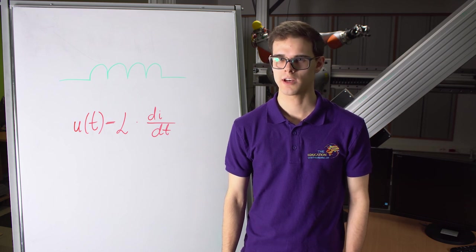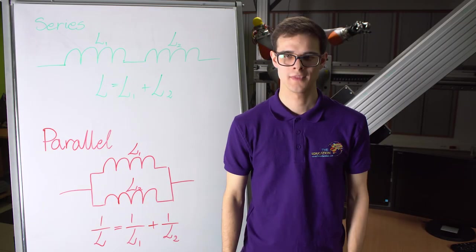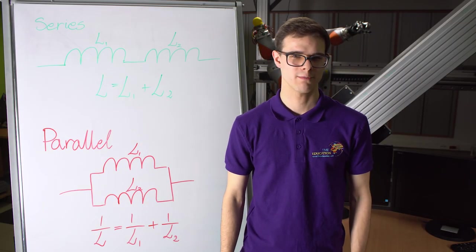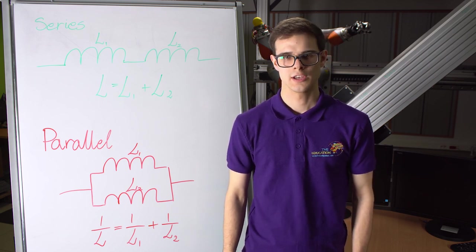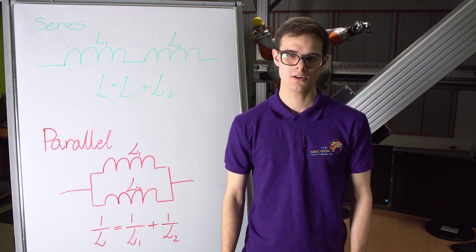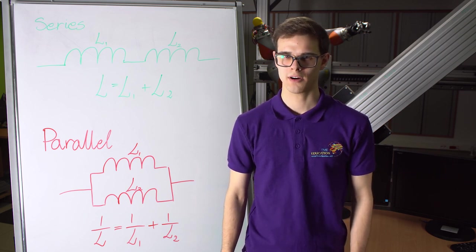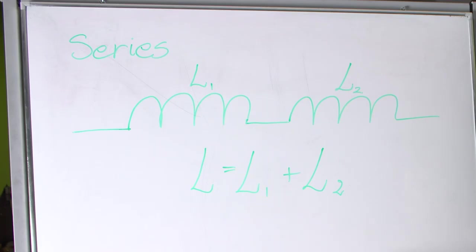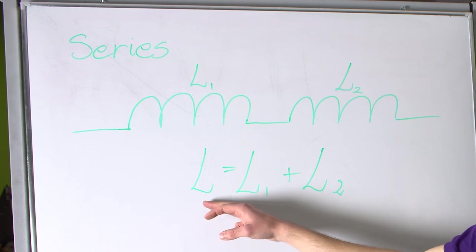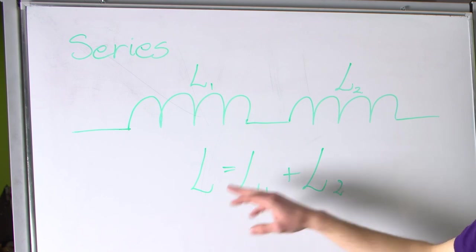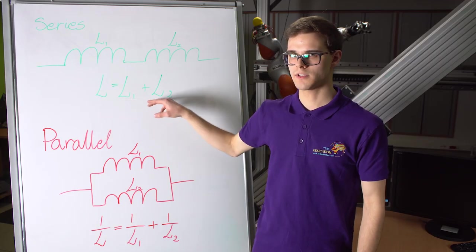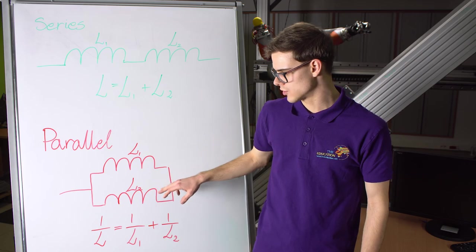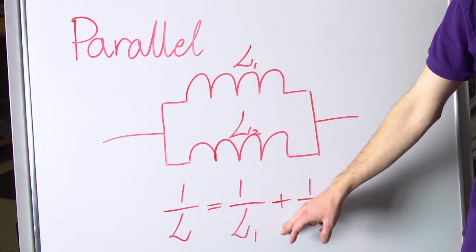If the current is too large, you can either melt the wire or melt the wire's insulation, causing a short circuit. A coil is also a kind of energy storage because it stores energy in the form of a magnetic field. Just like capacitors and resistors, coils can also be connected in parallel or in series. For resultant inductances: in series connection, resultant inductance is the sum of individual inductances, and in parallel connection it is the sum of inverse inductances.